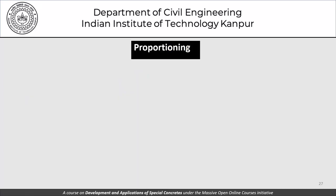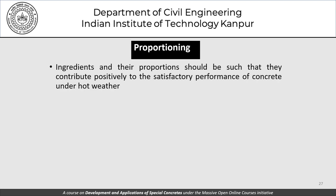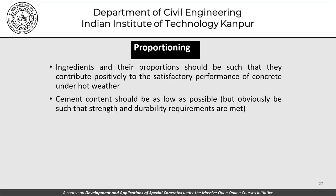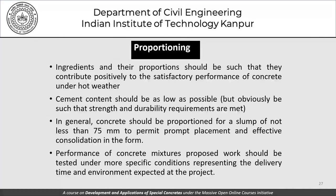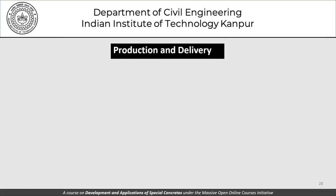Ingredients and their proportions should contribute positively to satisfactory concrete performance in hot weather. Cement content should be as low as possible while meeting strength and durability requirements. Concrete should generally be proportioned so that slump is not less than 75 mm to permit prompt placement and effective consolidation. The performance of proposed concrete mixtures should be tested under conditions representing the delivery time and environment expected at the project — this underlines the importance of mock-up exercises to replicate site conditions.